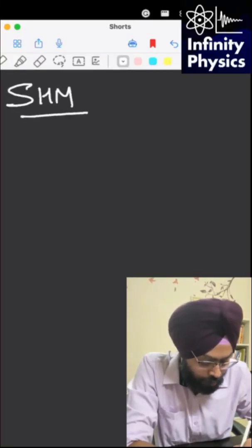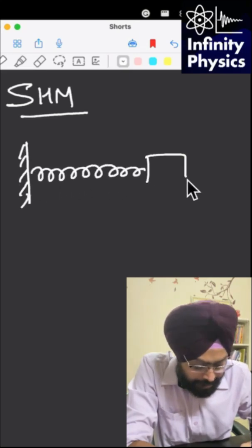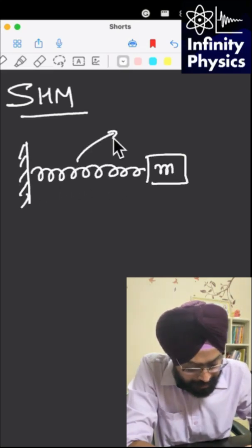Hello students, let's understand what is simple harmonic motion. So simple harmonic motion, consider you have a rigid support like this and there is a spring attached to the support and you have a mass m.